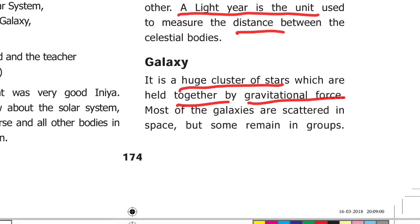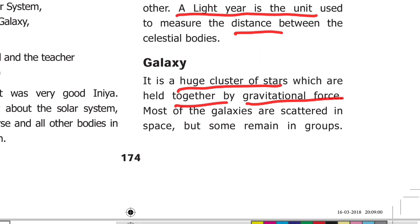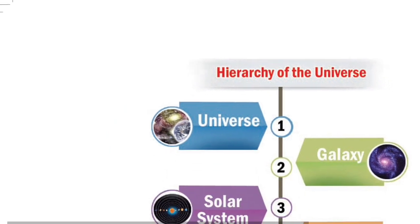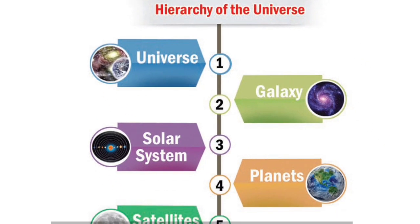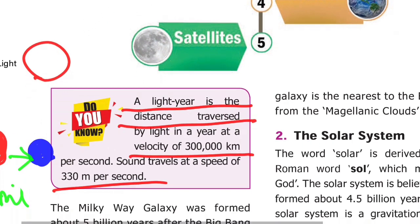Most of the galaxies are scattered in space, but some remain in groups. The hierarchy of the universe is: Universe, Galaxy, Solar System, Planets, and Satellites.